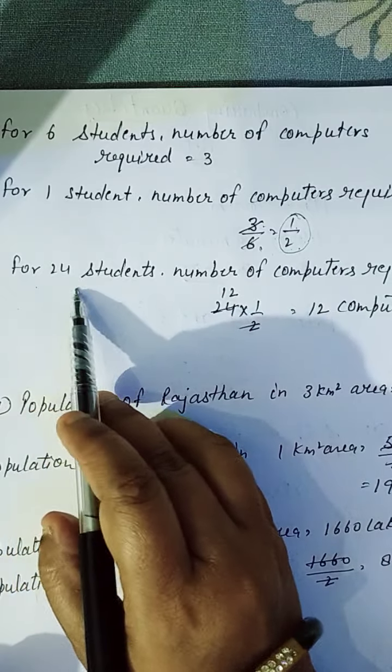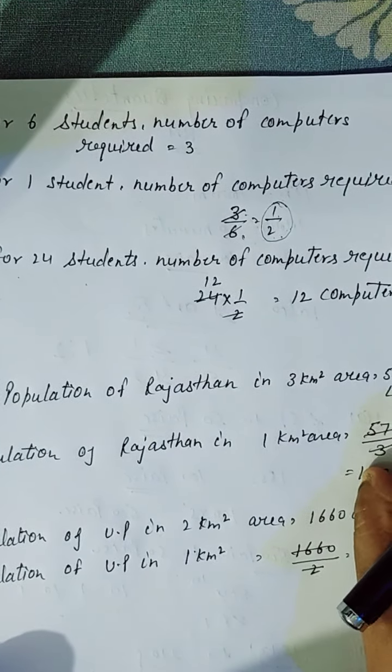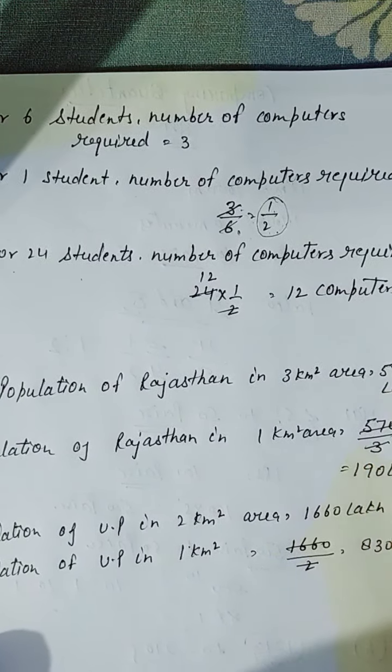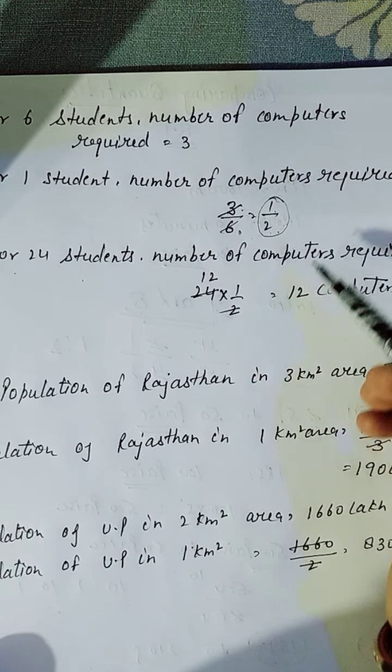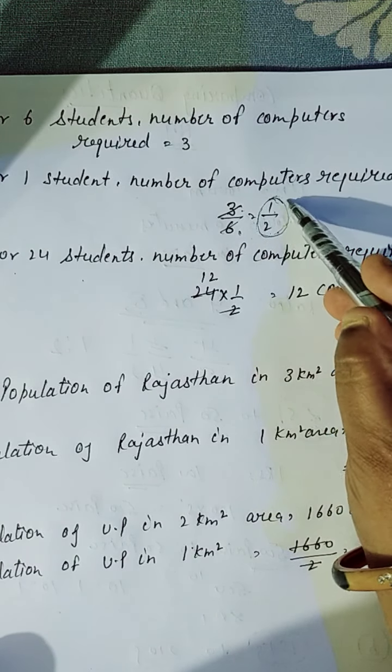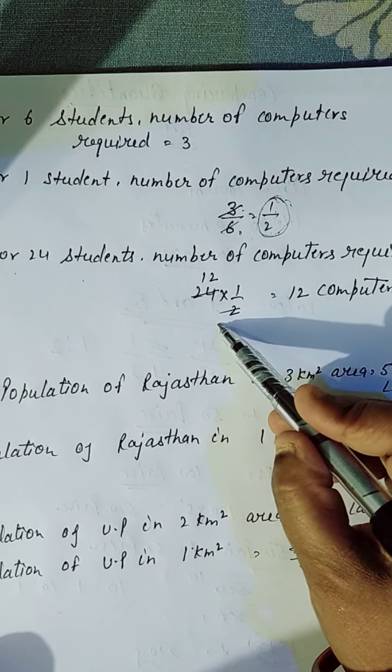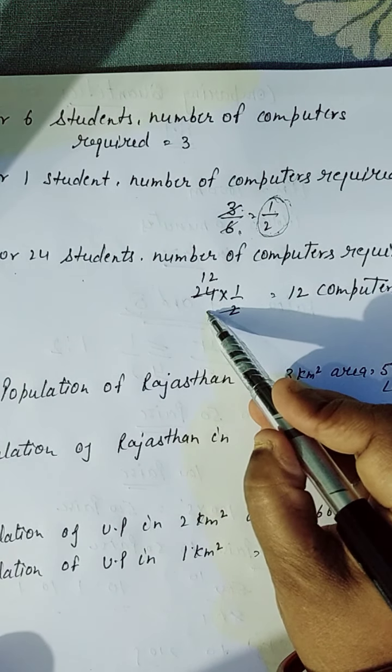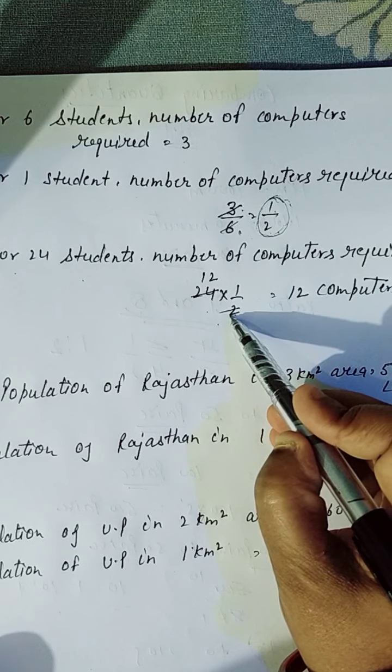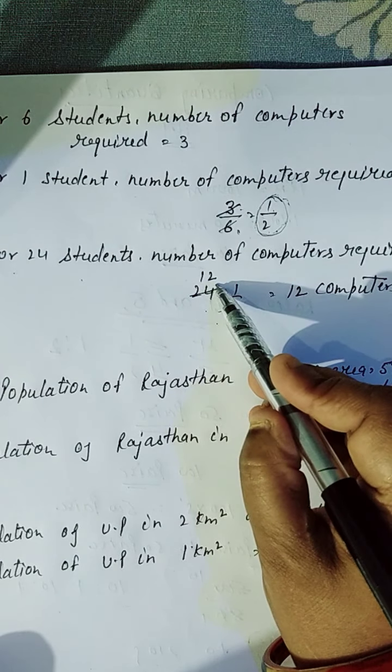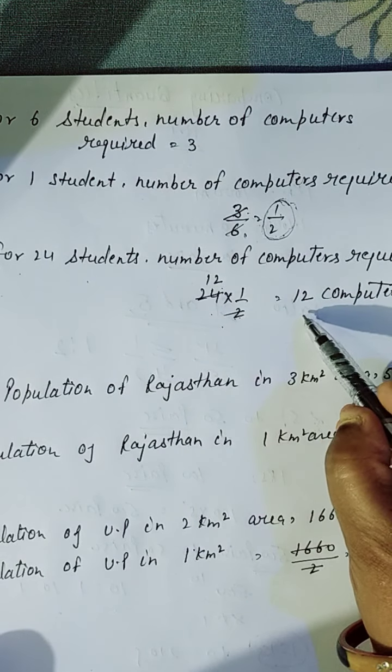So, for twenty-four students, number of computers required, twenty-four students ke liye kitne required hoonghe? Ham ne kya kiya? Ham ne ek ka nikala liya hai. To, ham twenty-four ko nikalne ke liye kya karenghe? Us mein multiply kar denghe. So, twenty-four into one by two karenghe. Two ones are two, two twos are twenty-four.